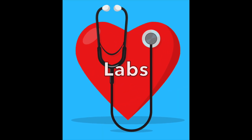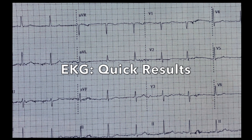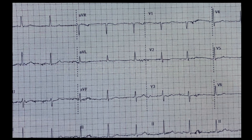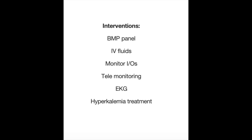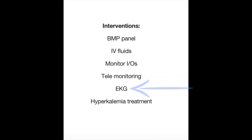Because these individuals are at risk for hyperkalemia, they may develop chest pain and/or palpitations. In addition to getting a BMP, cardiac enzymes, and other labs, an EKG should also be ordered — results are usually immediate. If you see peaked T waves on the EKG, this is often a sign of hyperkalemia. Interventions for individuals with Addison's disease who develop post-op hypotension include: BMP panel, IV fluids, monitoring I&Os, telemonitoring, EKG, and hyperkalemia treatment if indicated.